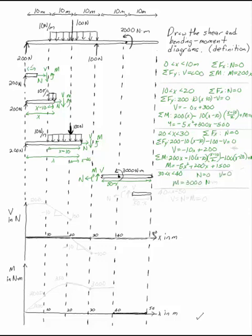Between 40 and 50, things are even easier if you go from the right-hand end. Between 40 and 50, all I have on my free body diagram are internal loads. There are no external loads. v equals n equals m equals 0. There aren't anything.